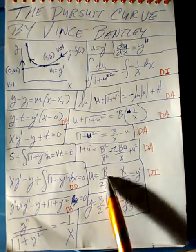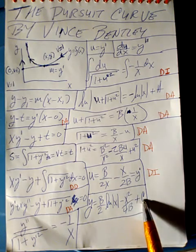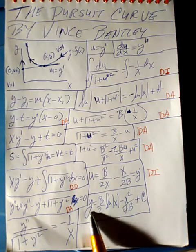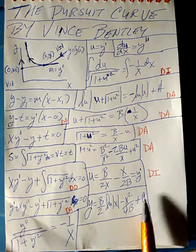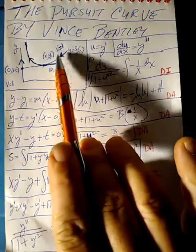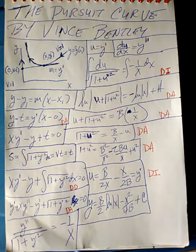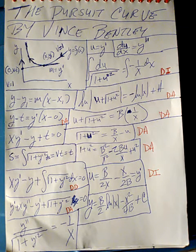Integrating both sides, the integral of y prime is y, giving us the pursuit curve with two constants B and C determined by the initial conditions — where the eagle starts and where the rabbit starts. That is the pursuit curve. I hope you enjoyed this video and I look forward to any comments. Thank you very much for watching.